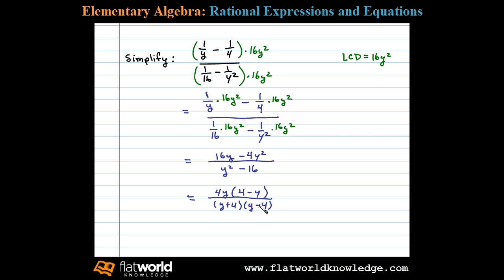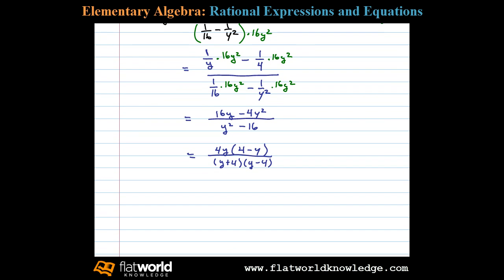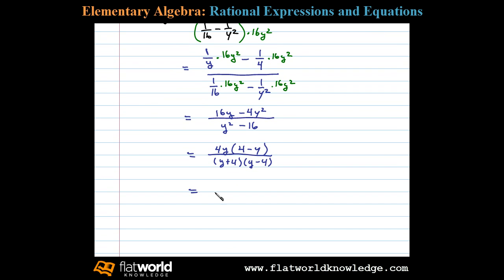Now here we have opposite binomial factors. So in the numerator we'll write 4 y times negative 1. Factoring out negative 1 here we'll be left with y minus 4.